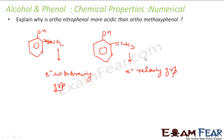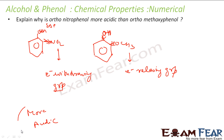Since the methoxy group is electron-releasing, it donates electrons to the ring, so phenol's demand from oxygen is reduced — oxygen doesn't harass hydrogen as much. But with the nitro group, phenol demands more electrons from oxygen, which in turn pulls more from hydrogen. Hydrogen gets more positive charge and is more easily released, so ortho nitrophenol is more acidic, while ortho methoxyphenol is less acidic.